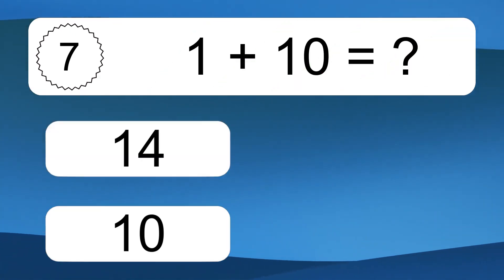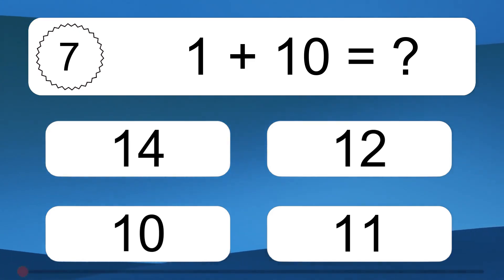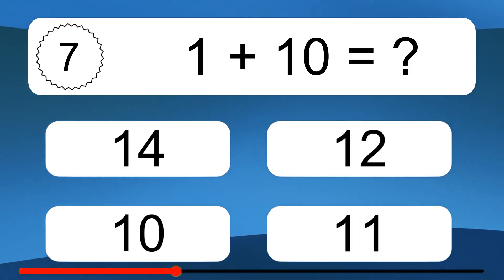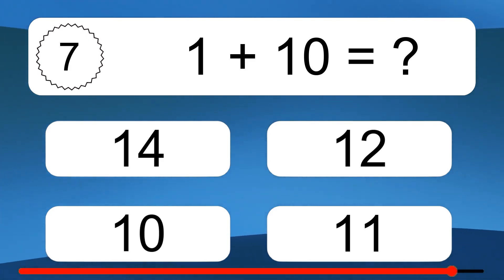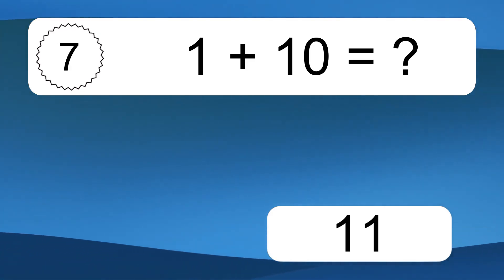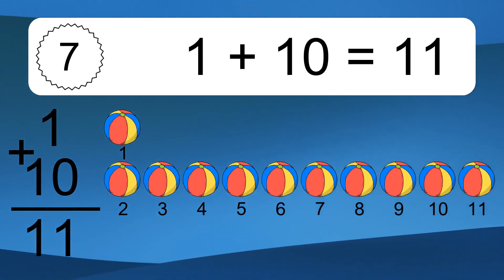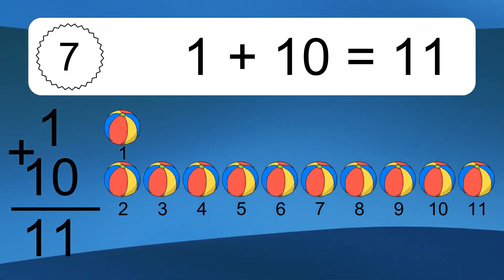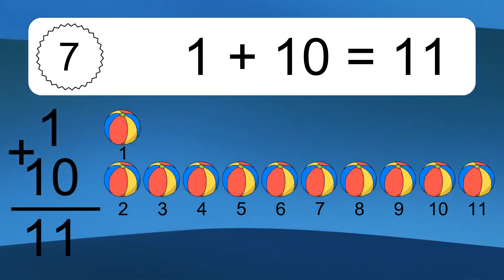1 plus 10 equals what? 1 plus 10 equals 11. Let's count it. 1, 2, 3, 4, 5, 6, 7, 8, 9, 10, 11.